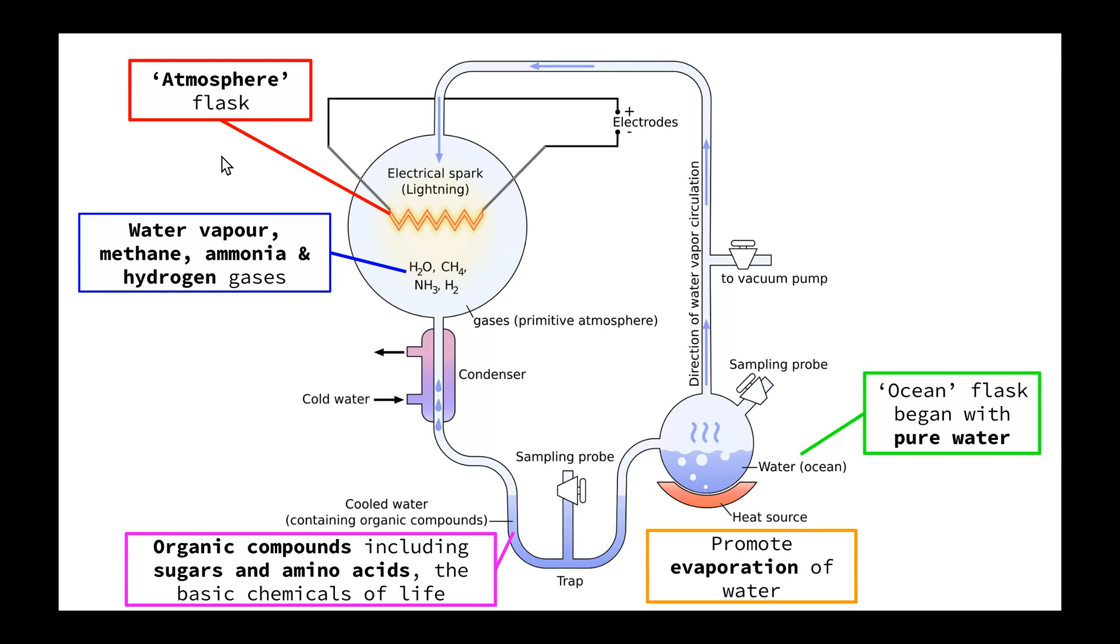Also, they had electrodes that created electrical sparks, which were there to simulate the lightning strikes that were happening all the time. It was believed that the electricity and the energy produced by the lightning helped to change the arrangement of the atoms in order to produce the different substances.